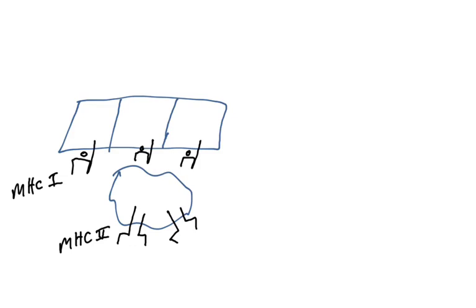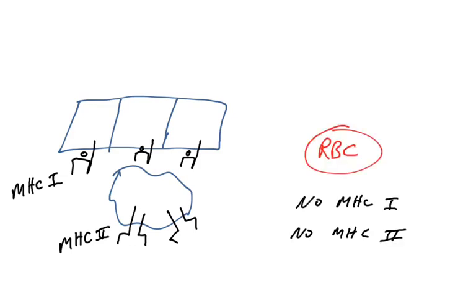MHC molecules type I and type II are found on the surface of many cells. They are responsible for many types of tissue rejections, which we'll talk about in later videos, but they're not responsible for rejecting blood types in blood transfusion. The reason is that red blood cells lack expression of MHC class I and MHC class II. So you don't have to tissue type blood for MHC antigens. We'll talk about that more in later videos.